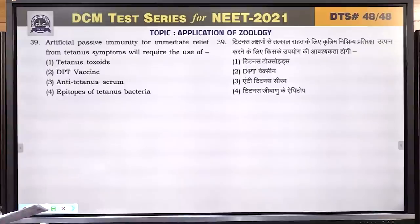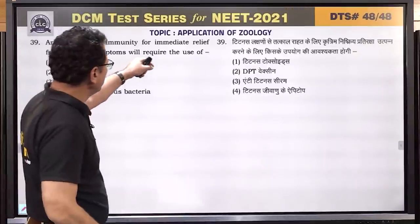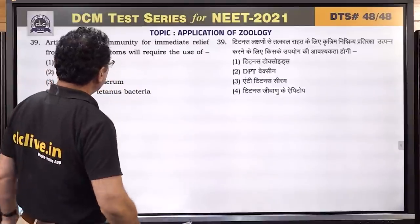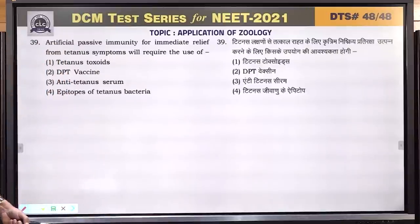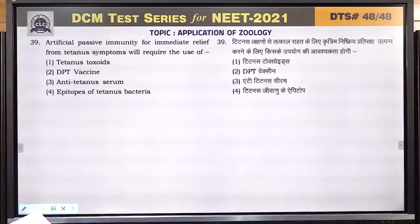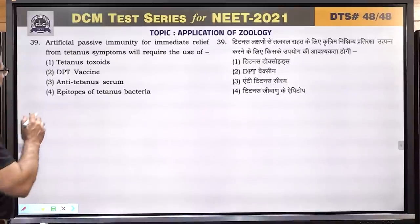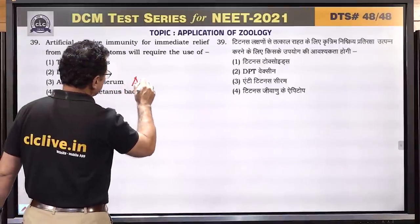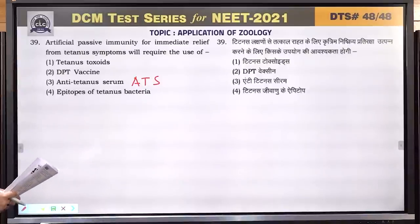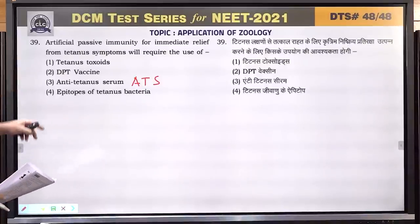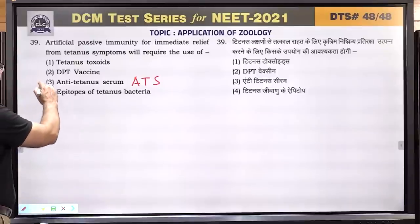Question number 39: artificial passive immunity for immediate relief from tetanus symptoms will require the use of ATS — anti-tetanus serum. Toxoid is not given in such cases. Anti-tetanus serum provides ready-made antibodies, giving immediate relief. This is artificial passive immunity.